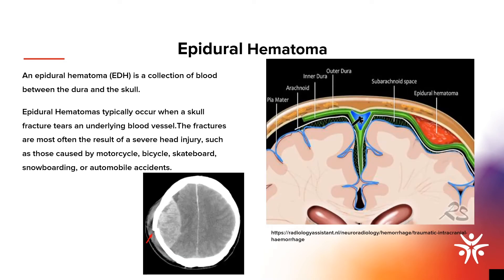Our next injury is an epidural hematoma — bleeding that occurs between the inside of the skull and the outer covering of the brain, called the dura. Epidural hematomas typically occur when a skull fracture tears an underlying blood vessel. This injury is most often the result of severe head trauma caused by motorcycle, bicycle, skateboard, snowboarding, or automobile accidents. An epidural hematoma may also be referred to in a record as an extradural hematoma.